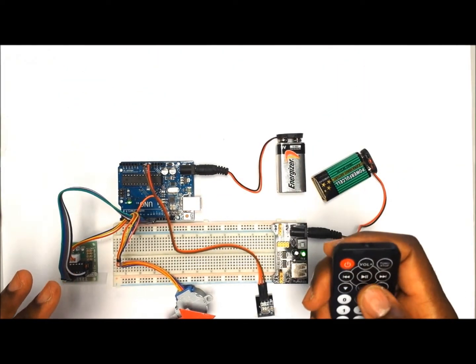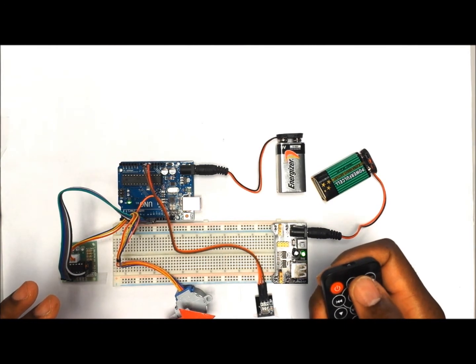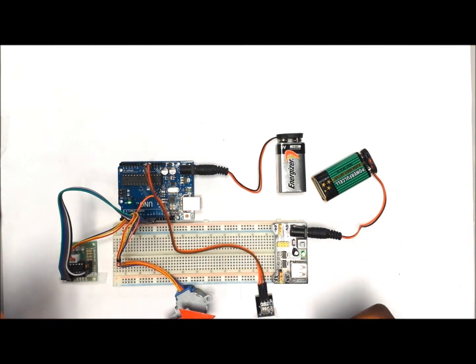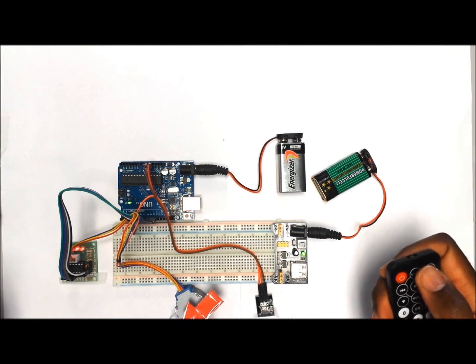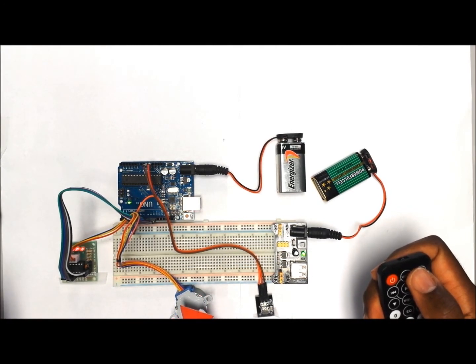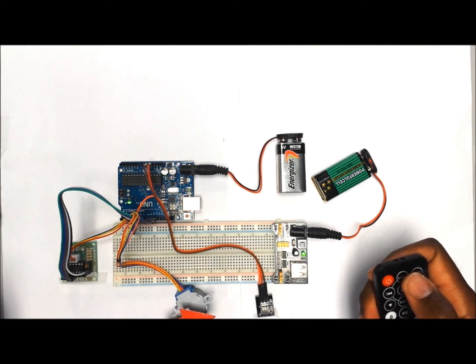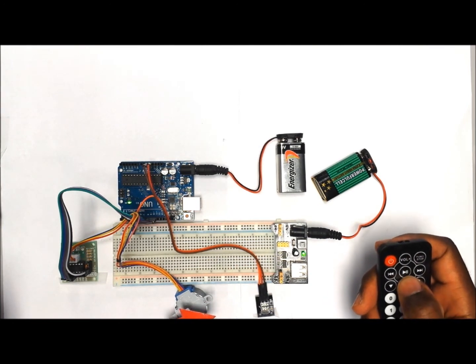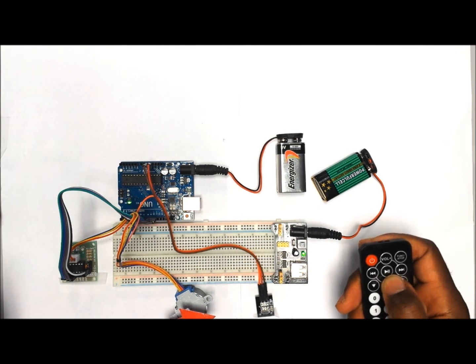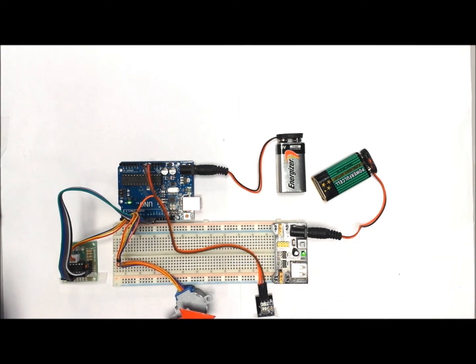So if everything is wired correctly, if we use the up and down volume buttons, you should be able to control the stepper motor like so. It will go through 360 degrees, and if you press the down volume button, it should go the opposite direction.